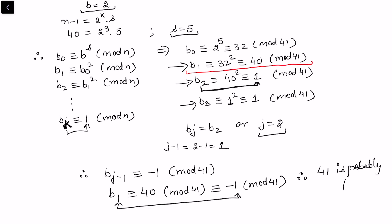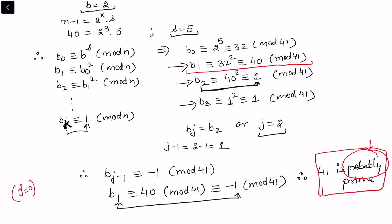We say probable prime because in some cases the condition is not satisfied, and when j equals 0 the test does not work. Although we can still confirm 41 is prime by verifying it has no factors, the word probable is attached here as the test is not always definitive.